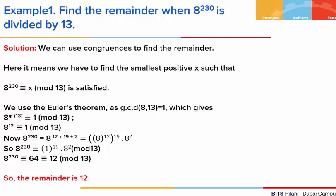In the first example, we are asked to find the remainder when 8 to the power 230 is divided by 13. This is a big number, so neither can we do it manually, nor with a calculator, as the display space in a calculator is limited to 12 digits. Congruences in such a case come to our rescue.